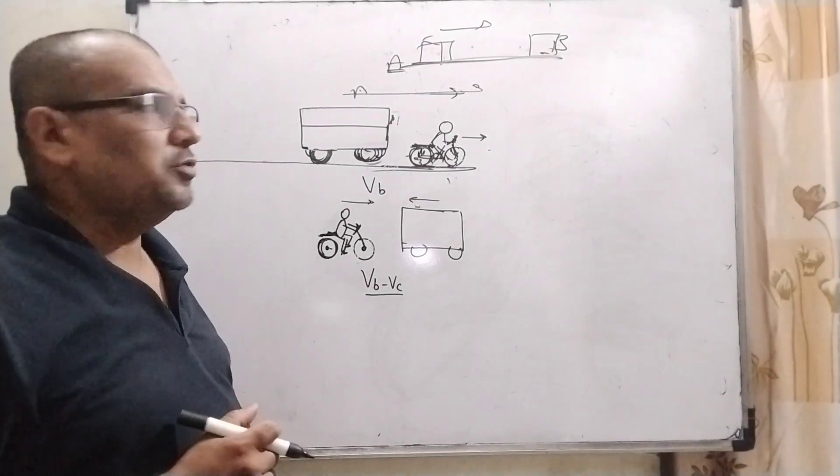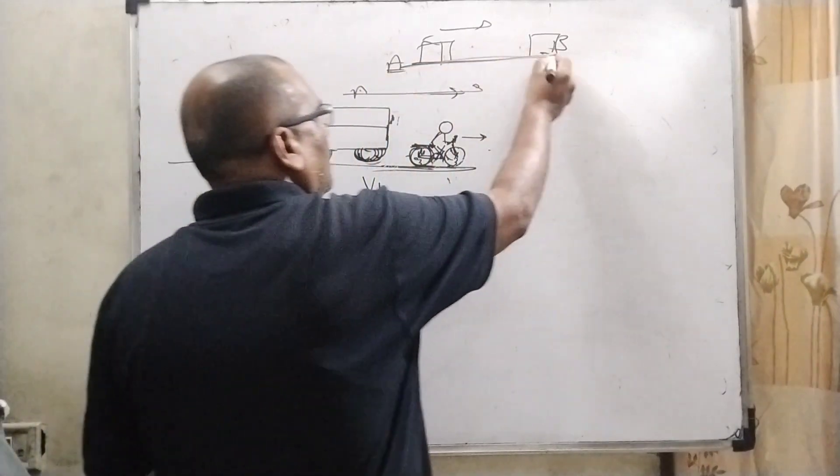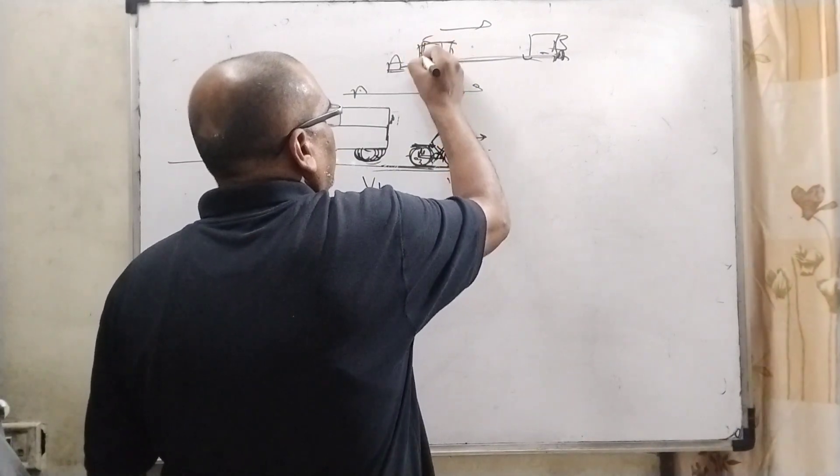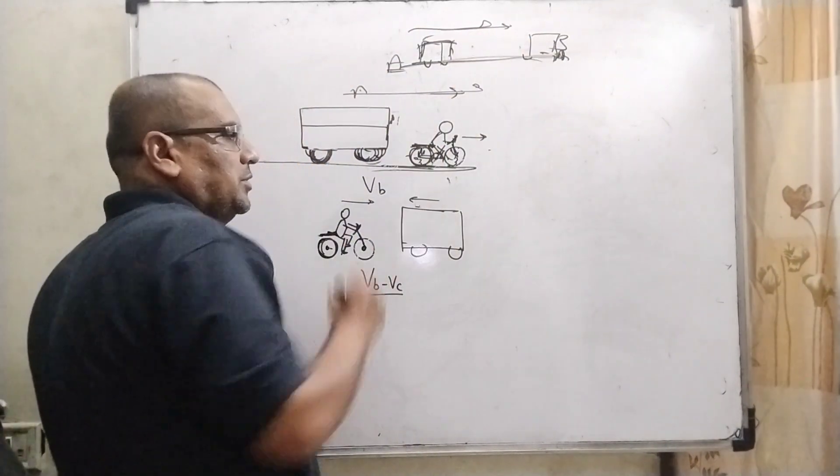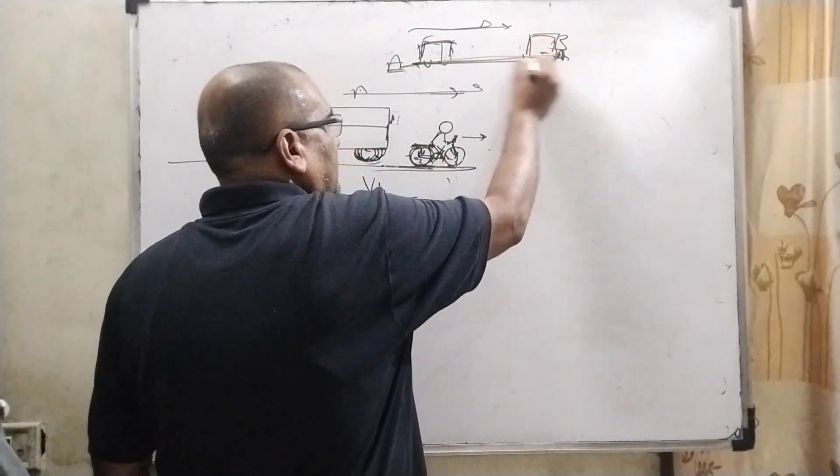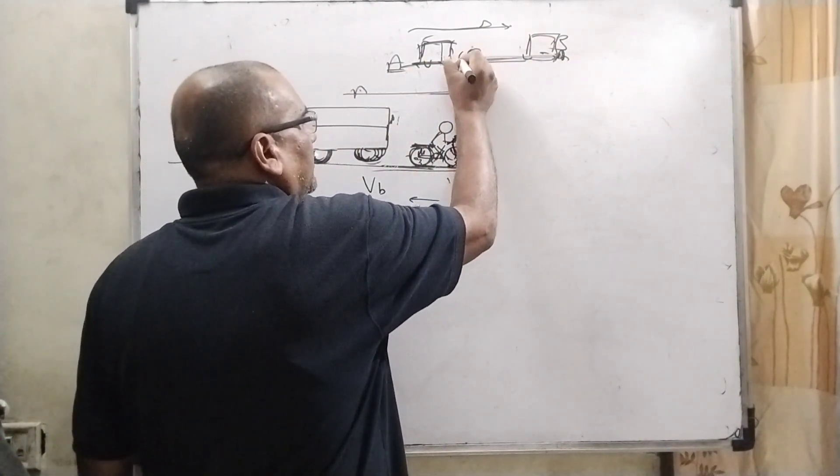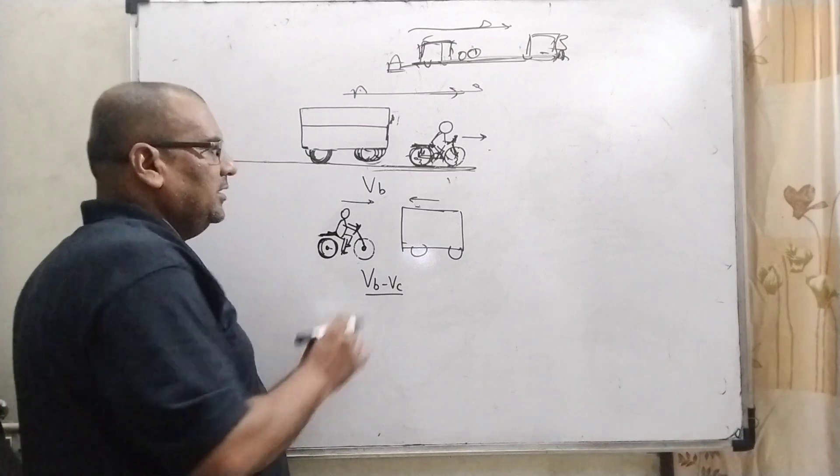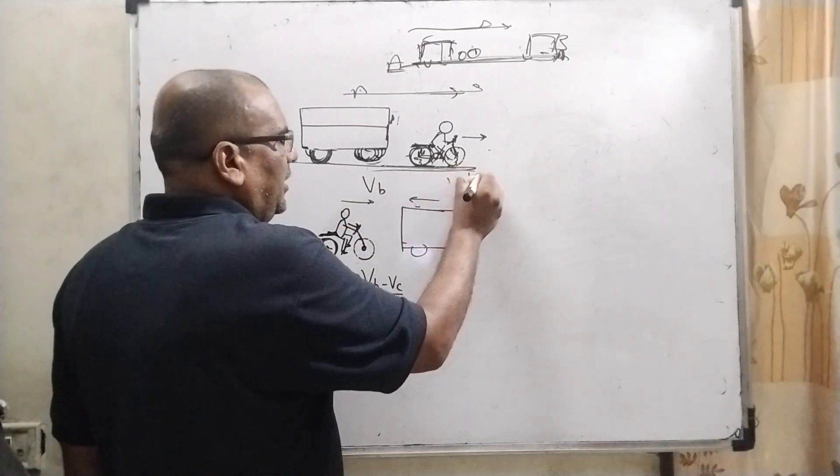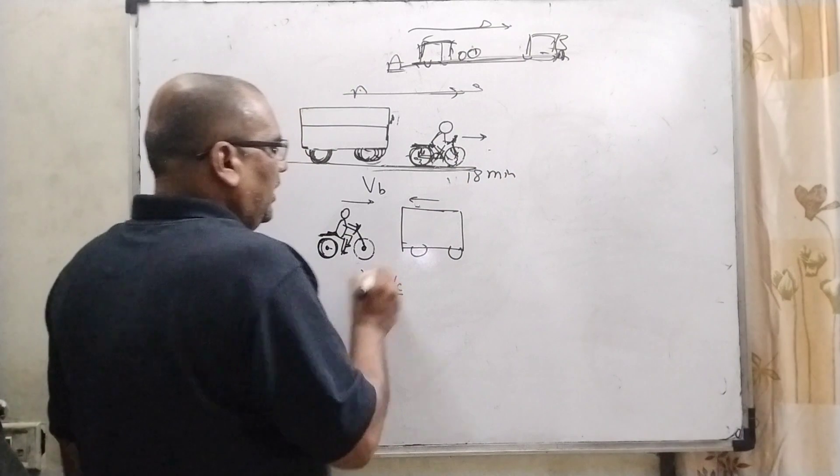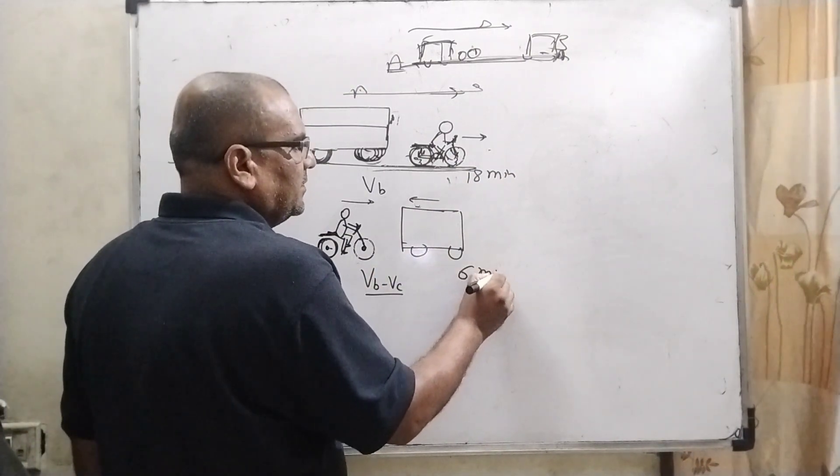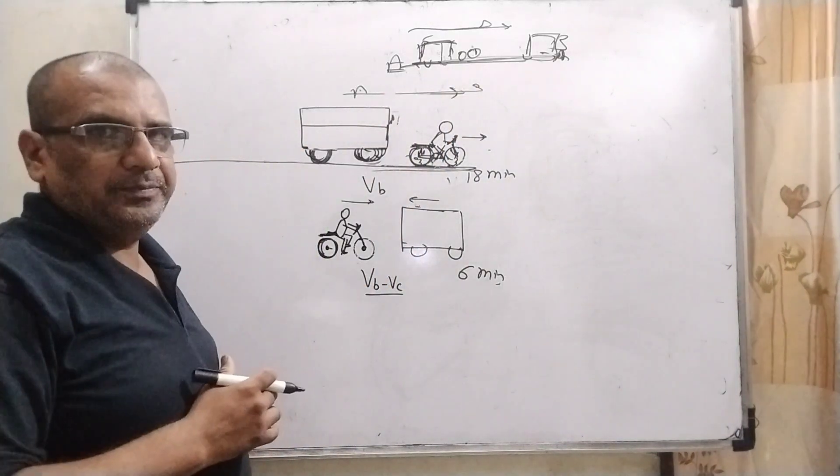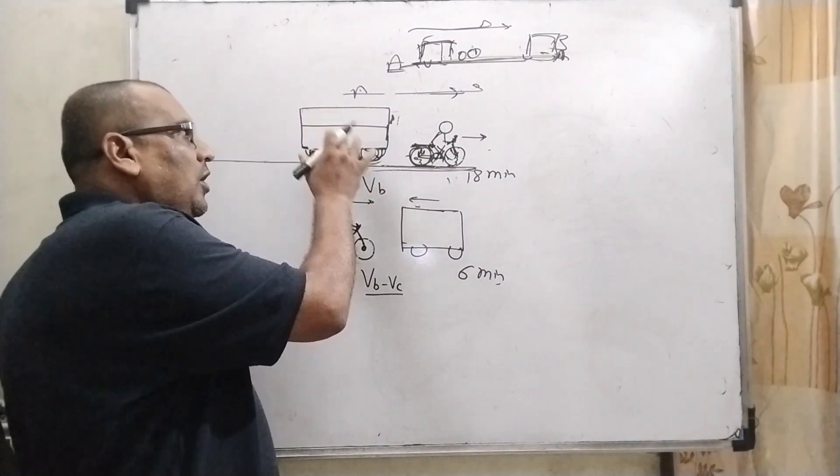First of all, we have to understand what the question says. Here we have given two towns and they are connected by regular bus services. So one bus goes up and another goes down. A cyclist observes when a bus goes along with the direction of the cyclist, it passes in 18 minutes. In opposite direction it passes in six minutes. We have to find out the time period, the time interval between these bus services, and find out the velocity of this bus.